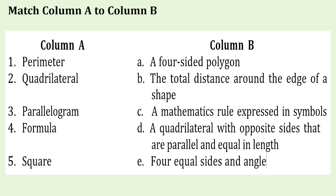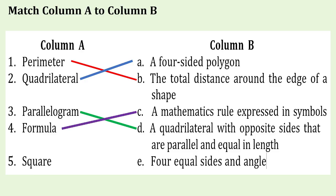Let's answer this. Match column A to column B. Number 1: Perimeter — Letter B: The total distance around the edge of the shape. Number 2: Quadrilateral — Letter A: A four-sided polygon. Number 3: Parallelogram — Letter D: A quadrilateral with opposite sides that are parallel and equal in length. Number 4: Formula — A mathematics rule expressed in symbols. Number 5: Square — Letter E: Four equal sides and angles.